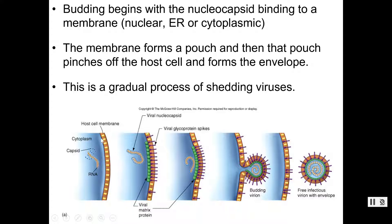Meanwhile, during protein synthesis, the virus made a whole bunch of glycoproteins — those viral protein spikes — and those got inserted into the host cell membrane. The envelope has to contain attachment proteins or spikes, which were previously inserted during the synthesis stage. Now the nucleocapsid, bound to the viral matrix proteins on the inside, pushes out, causing the membrane to push outward. The membrane with its glycoproteins encapsulates the nucleocapsid and pinches off until we get a free virion, released into the environment with a functional envelope.